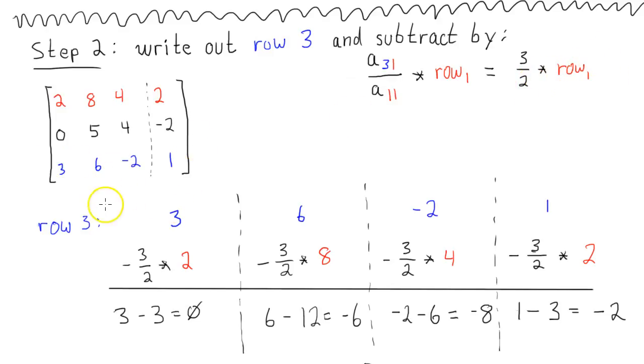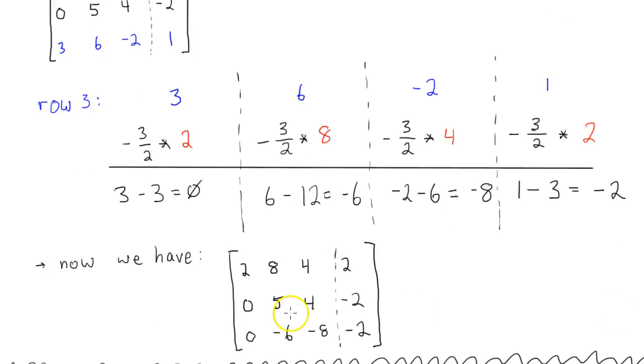So we write out our row 3. And then start subtracting by that factor, multiplied by each element of the row. And so on. And then we get our numbers. So 0, negative 6, negative 8, negative 2. We put that back into our matrix, our augmented matrix.